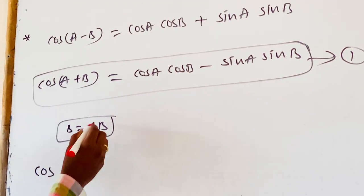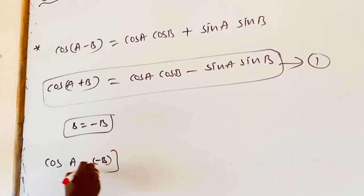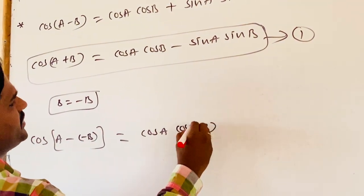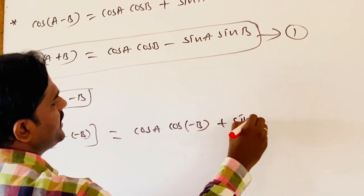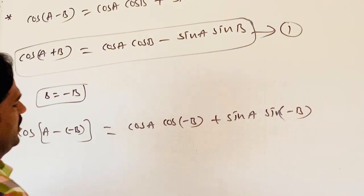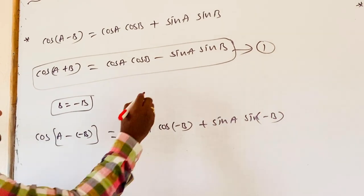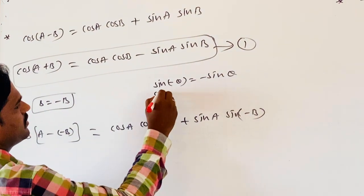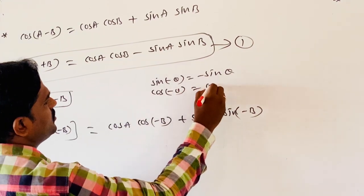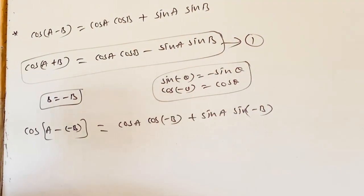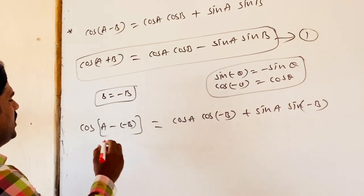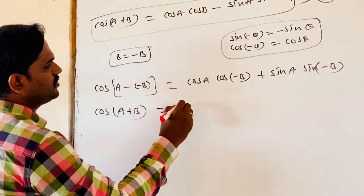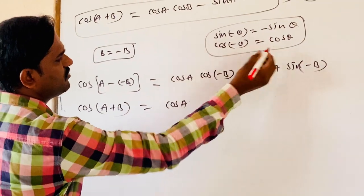So, cos of A minus (minus B) is equal to cos A times cos(minus B) plus sin A times sin(minus B). We already know: sin(minus theta) is equal to minus sin theta, and cos(minus theta) is equal to cos theta. By using these two conditions, which we learned in the trigonometric ratios, observe: cos of A minus (minus B) is equal to cos A times cos theta value, which is cos B.